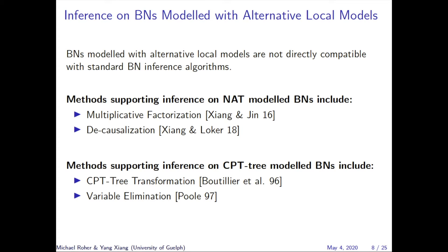Bayesian networks modeled with alternative local models are not directly compatible with standard BN inference algorithms. Methods supporting inference on NAT model Bayesian networks include multiplicative factorization, where NAT model Bayesian networks are converted to equivalent efficient Markov networks, and decausalization, where NAT model Bayesian networks are converted to equivalent efficient tabular BNs. Methods supporting inference on CPT tree model Bayesian networks include CPT tree transformation, where CPT tree model Bayesian networks are converted to equivalent efficient tabular BNs, and variable elimination, where all non-query variables are marginalized without leaving the query.